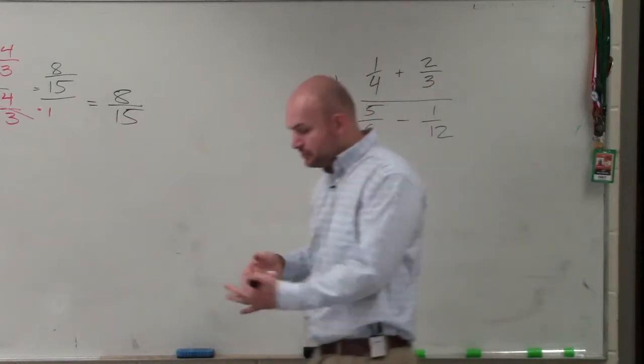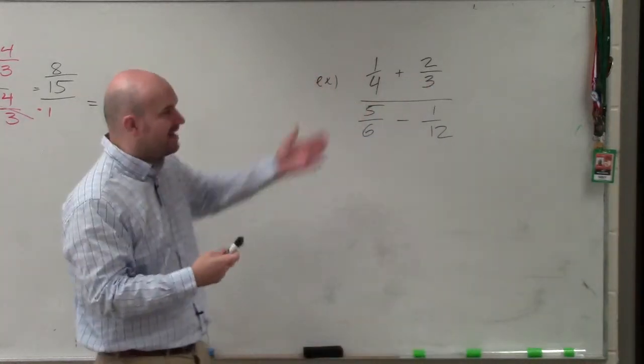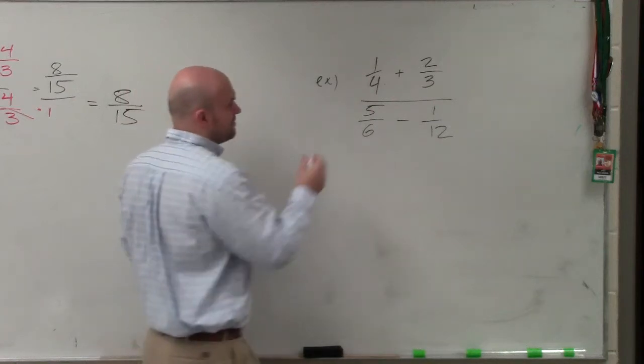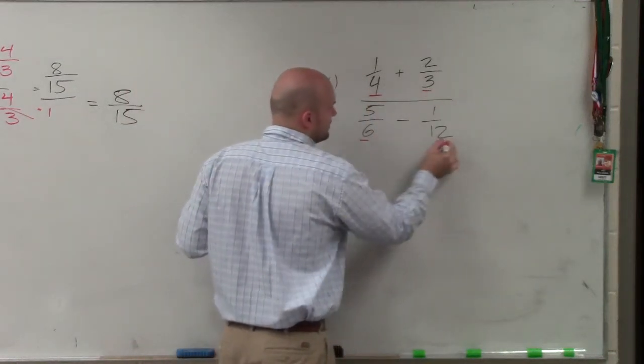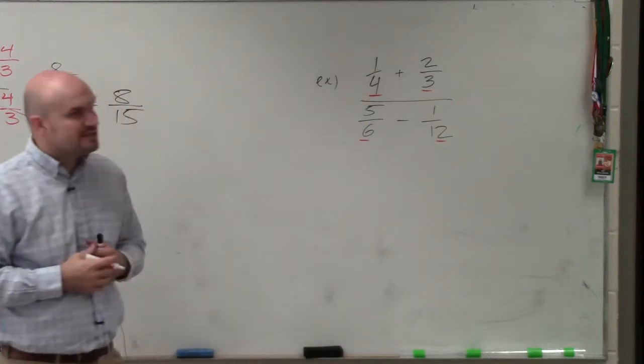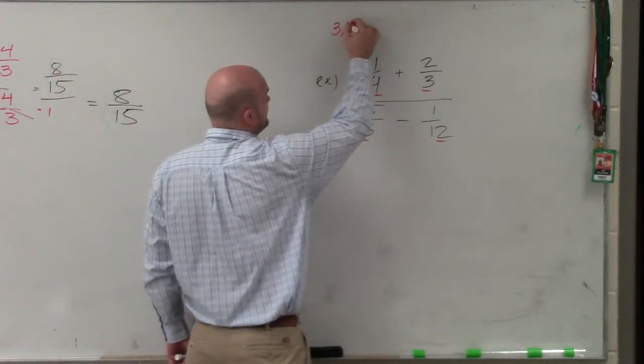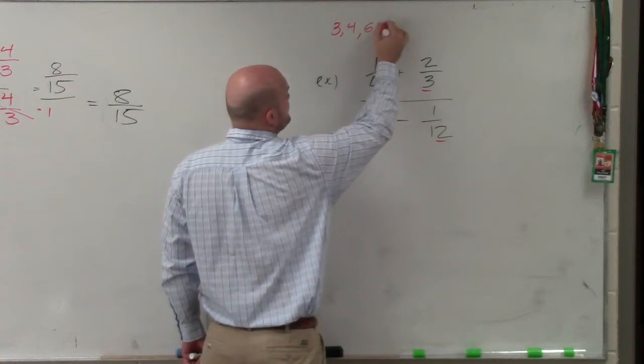So what we want to do in this case to help us simplify this is to get rid of my denominator. You can see I have not only one or two denominators, I now have four different numbers in my denominator: 3, 4, 6, and 12.